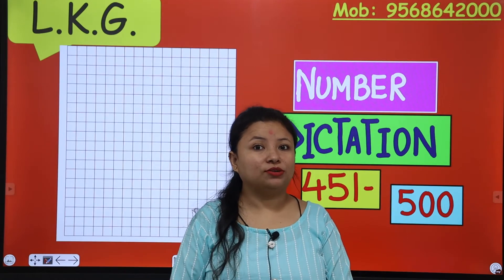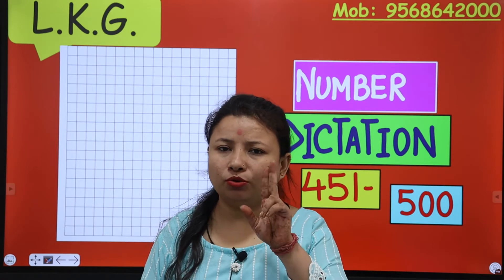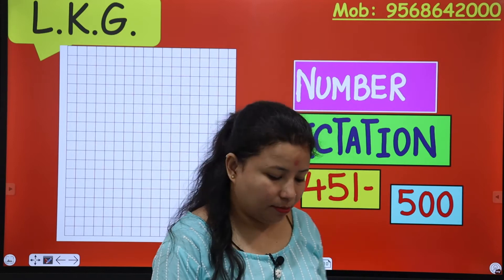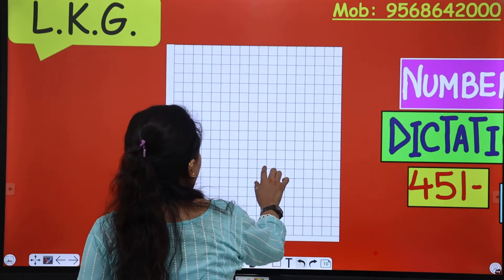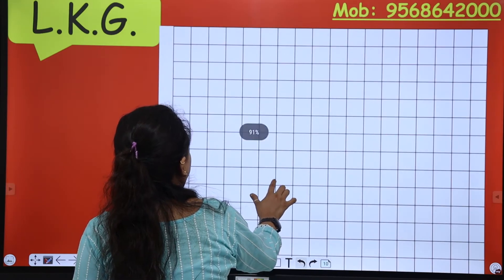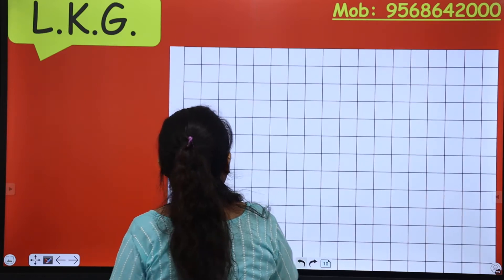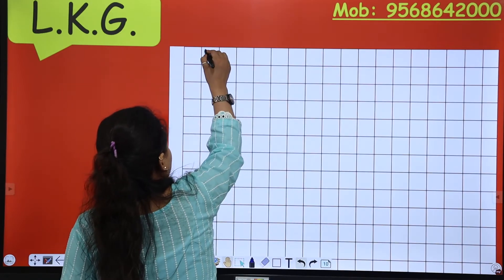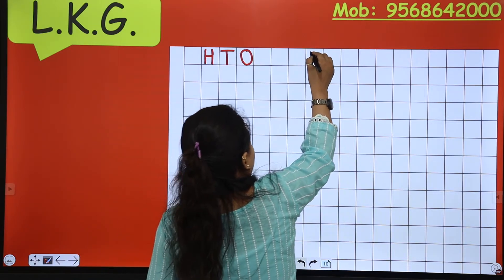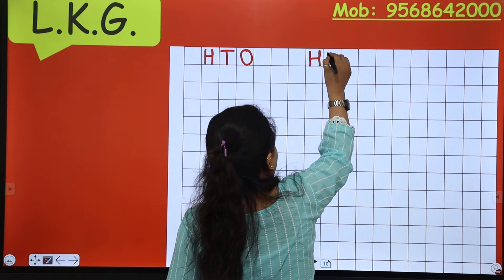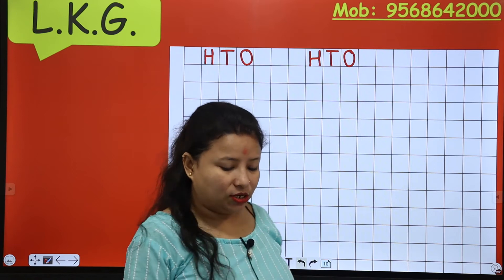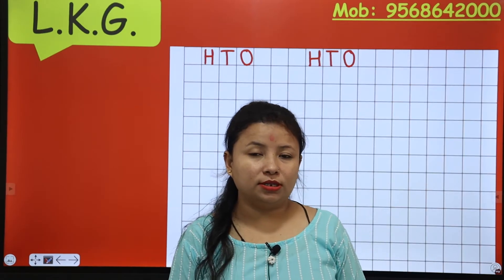So now get ready with your notebook — ma'am is giving you 2 minutes. Okay, so now ma'am is ready. Number dictation: ma'am will speak numbers and you have to write them down in your notebook. First of all, write HTO and again HTO. Okay, so how do you learn that counting?